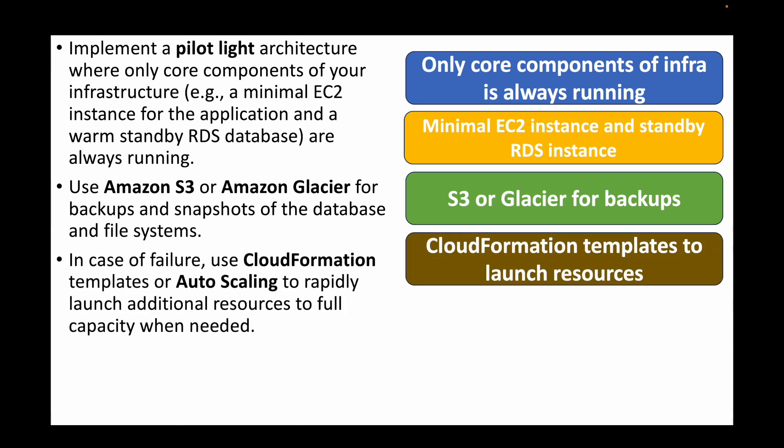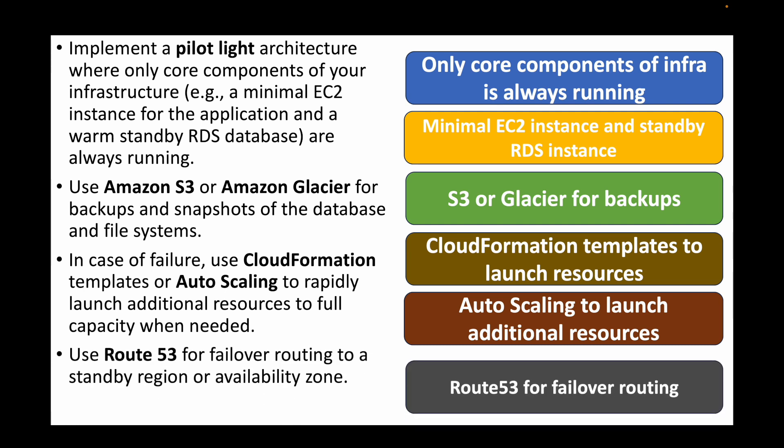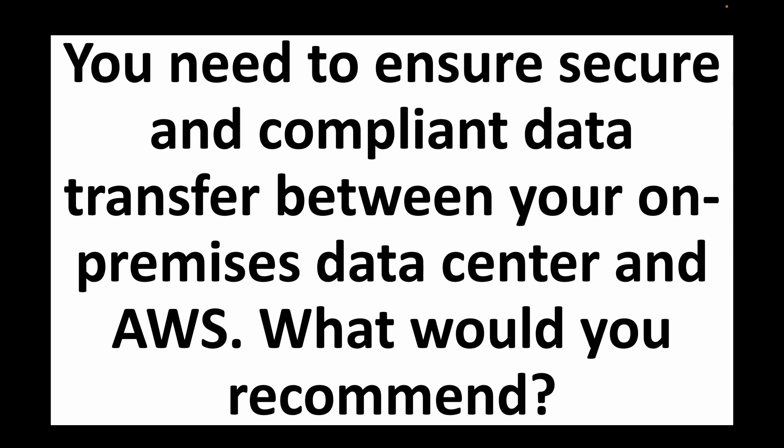In case of failures, we use infrastructure as code via CloudFormation templates, and Auto Scaling to rapidly launch additional resources to full capacity when needed. Finally, Route 53 is used to fail over routing to the standby region. So we maintain a very minimal infrastructure with core components, and if anything goes wrong in the primary region we simply update Route 53 to point to the standby region.